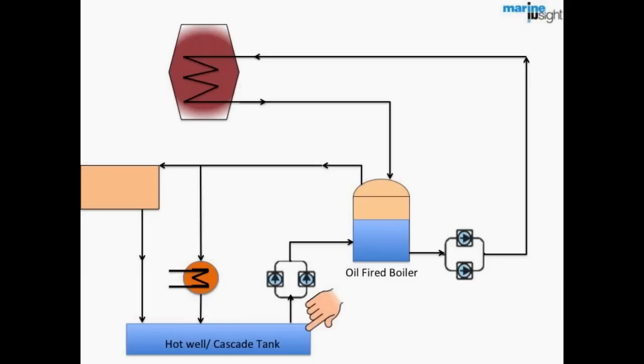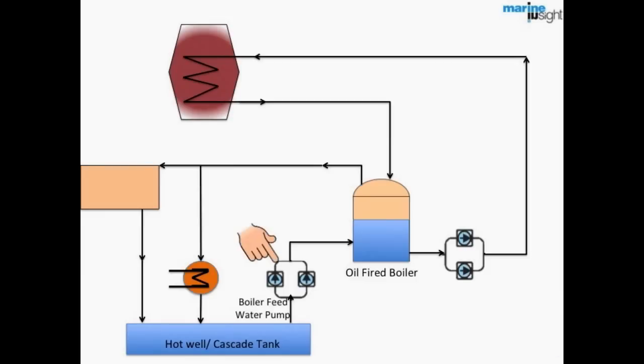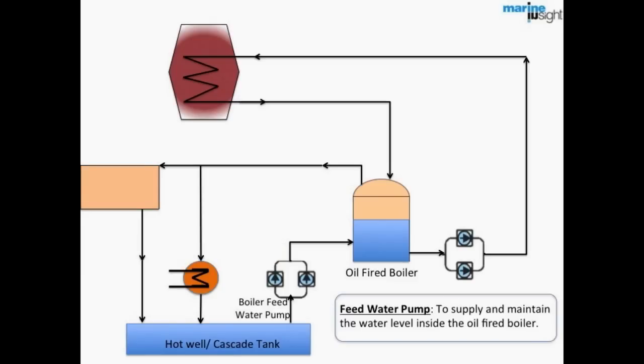Hot well or cascade tank which is a dedicated tank for supplying water at high temperature to the boiler and to collect the return steam from the system. A boiler water feed pump which supplies and maintains the water level inside the oil fired boiler.